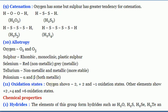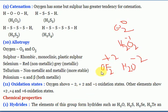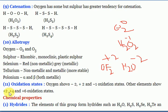Oxidation state is very important. Oxygen exhibits variable oxidation states: −2, −1, 0, +1, and +2. In OF₂, oxygen's oxidation number is +2; in H₂O it is −2; in hydrogen peroxide it is −1; and in O₂ it is 0. So oxygen exhibits variable oxidation states, and the remaining elements also exhibit variable oxidation states.